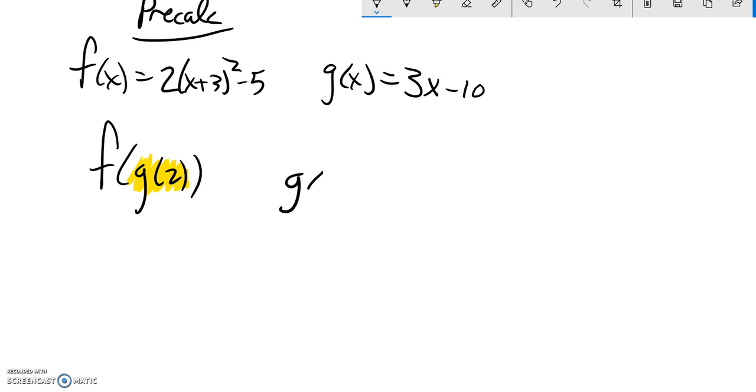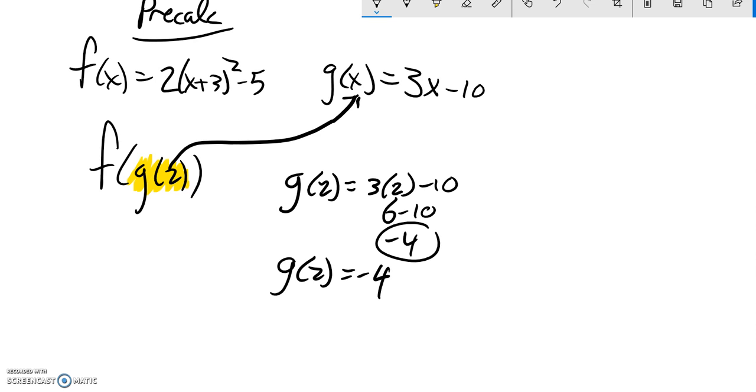So g of 2, we're taking 2 and we're going to plug it into g. So when we do that, we get 3 times 2 minus 10, 6 minus 10 is negative 4. So g of 2 is negative 4.